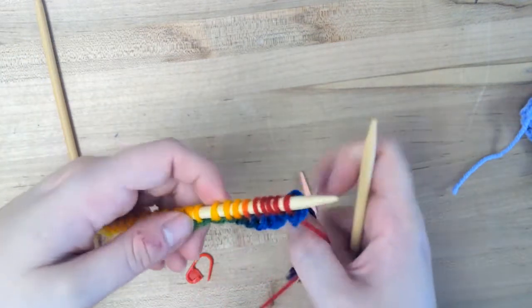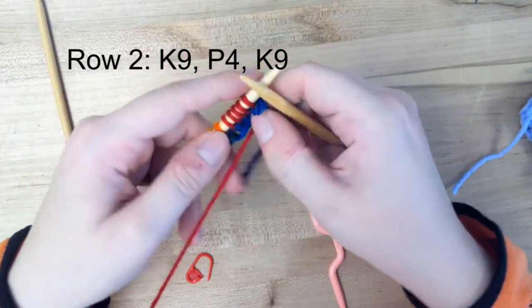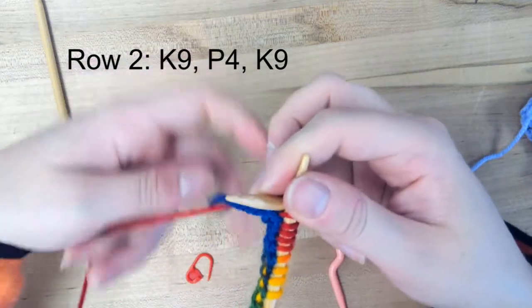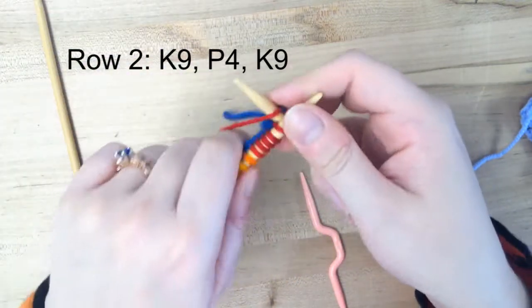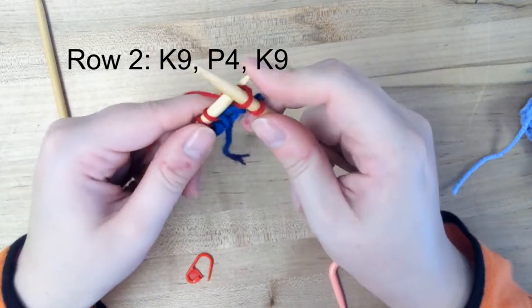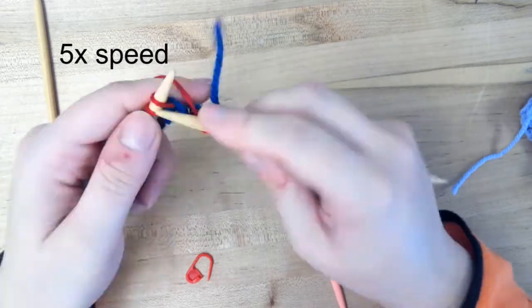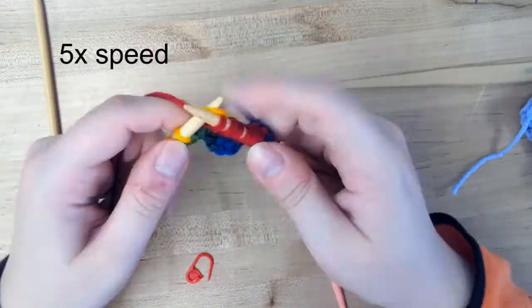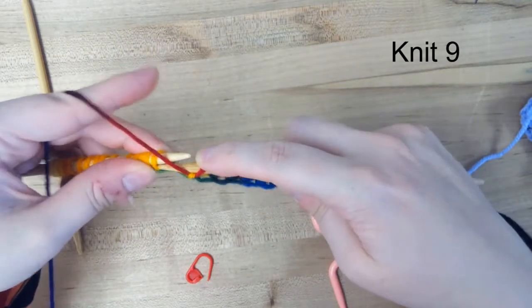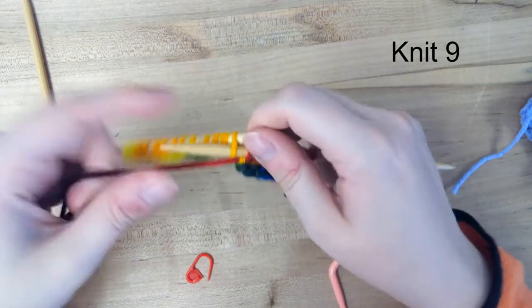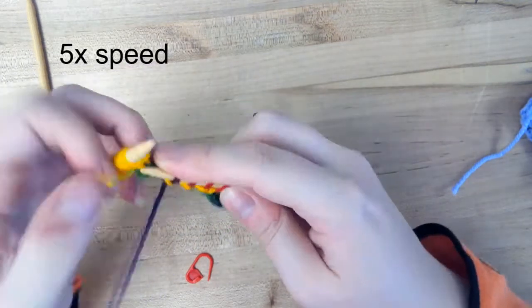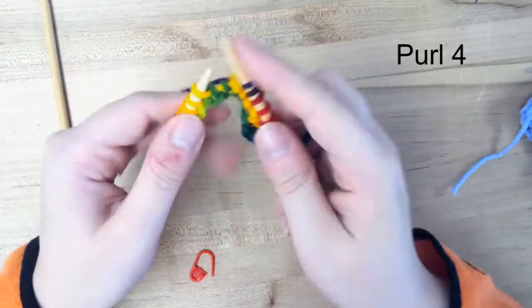We're going to knit nine, purl four, and knit nine. It's basically the reverse of row one. We're going to knit nine and now purl four. Knit the last nine.